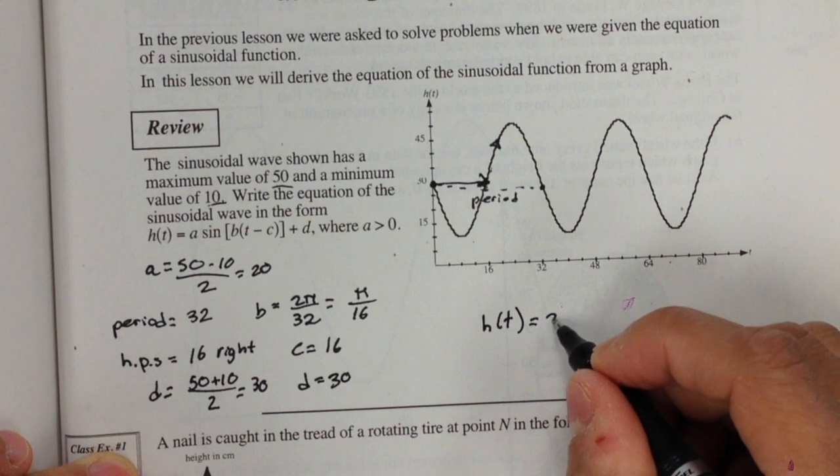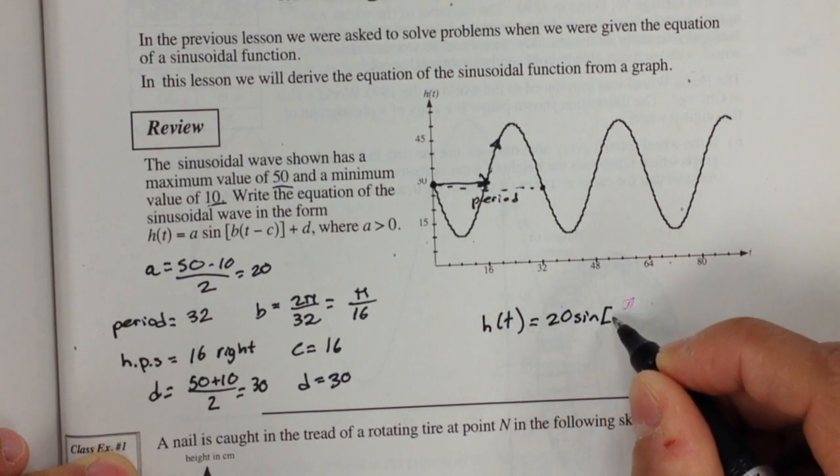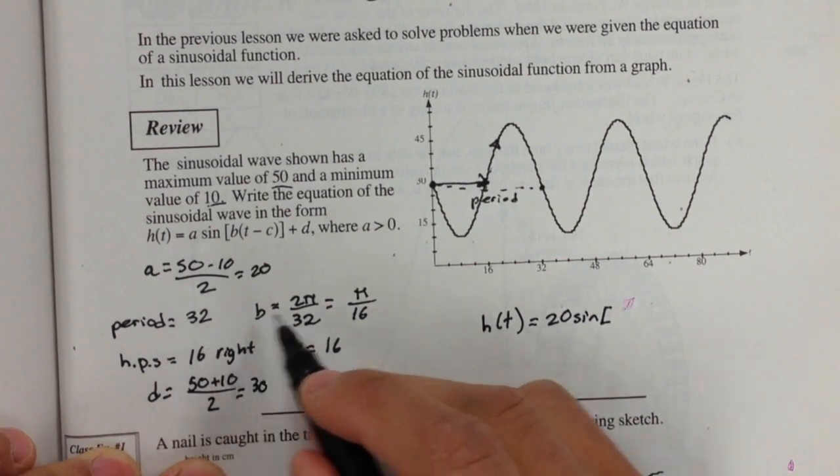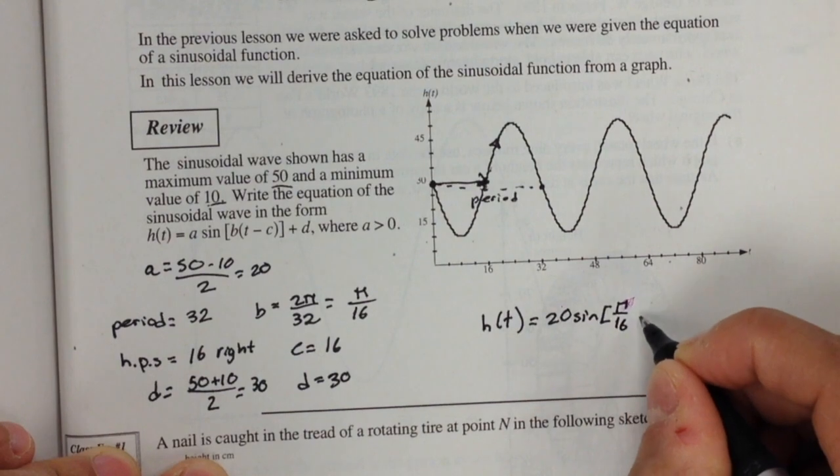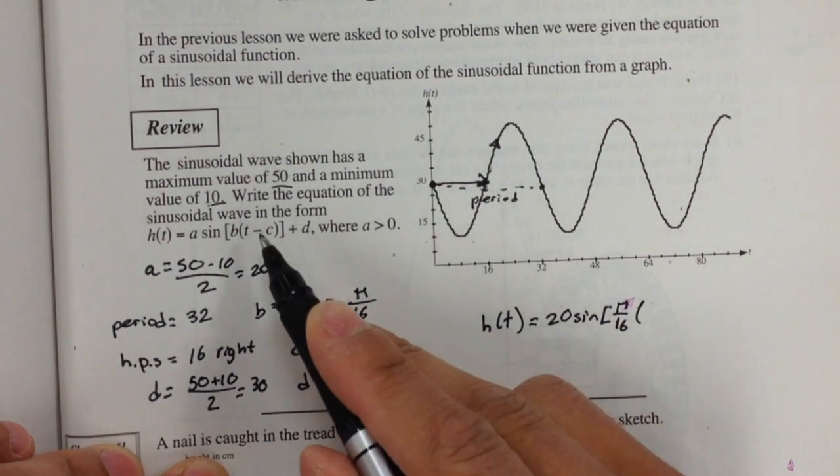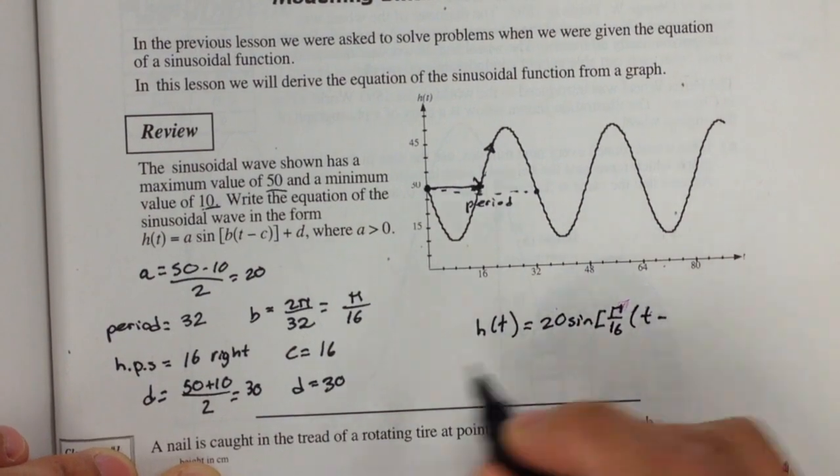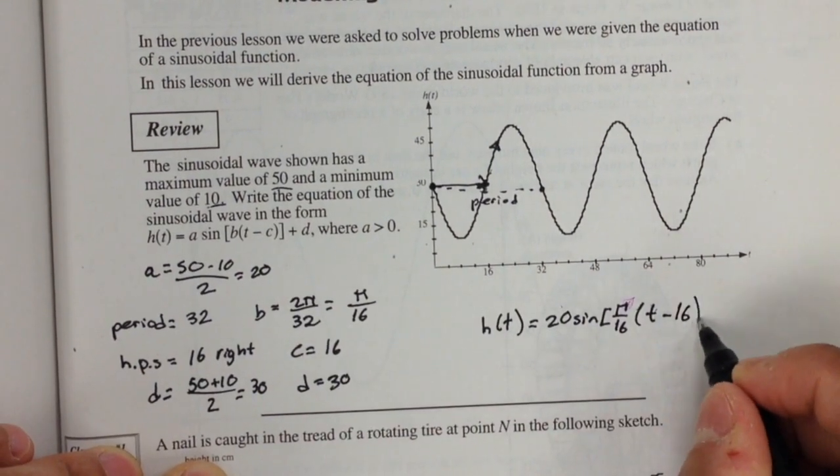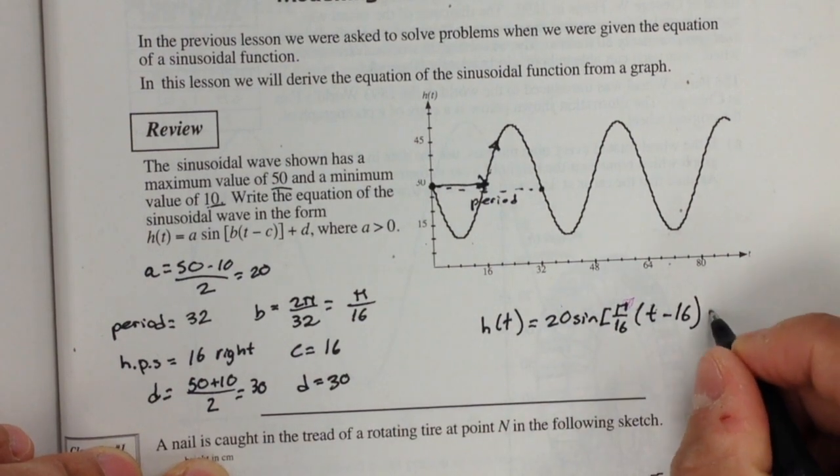Now all I'm going to do is plug all of these into the equation that we're given. So the amplitude was 20, 20 sine bracket, my period was π over 16, and then I have t. My horizontal frame shift was 16, and my vertical displacement is 30.